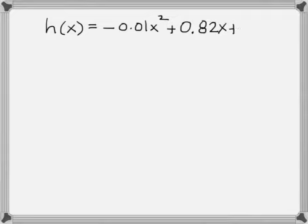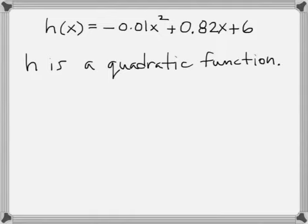Taking a look at the model, this function gives us the height h, x is the horizontal distance in feet. Looking at this function, it's a quadratic function. It's a real number times x² plus another real number times x plus a constant.